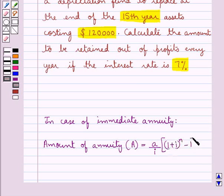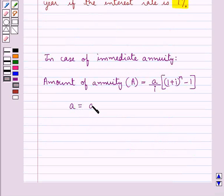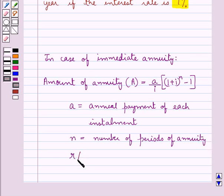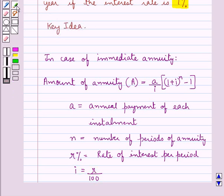Then the small a is the annual payment of each installment. Then n is the number of periods of the annuity. R percent is the rate of interest per period and so i is equal to r upon 100. This is the key idea that we use in this session.